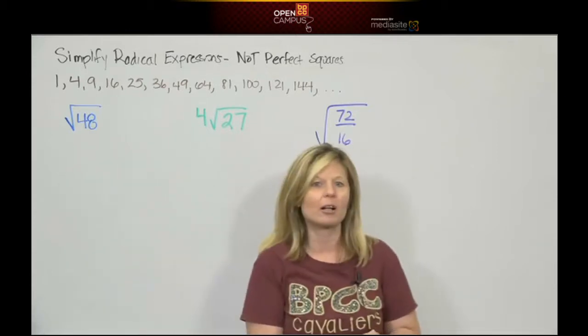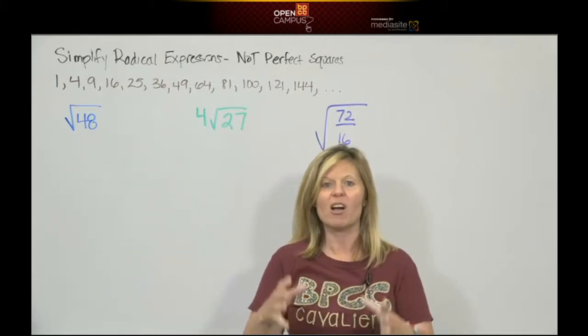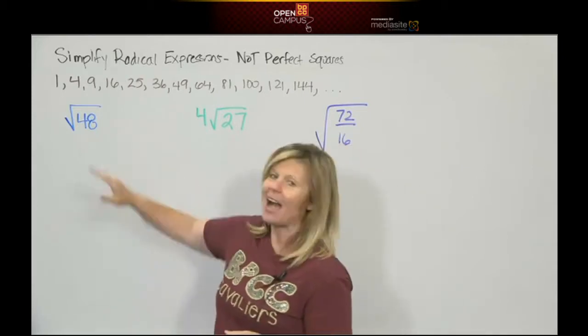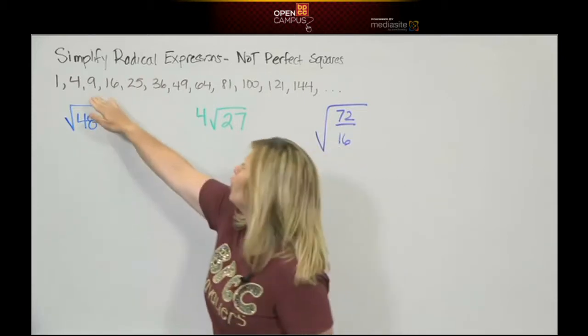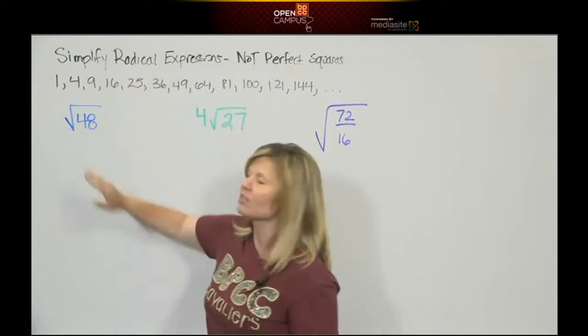To reduce a radical expression, your job is to find the largest perfect square that's a factor of 48. The largest number on this list that divides into 48.